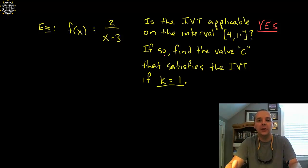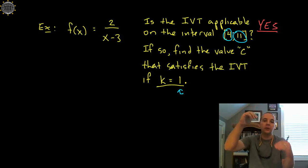And so if so, let's try to find the value of c that satisfies the intermediate value theorem if they provide us a y value of 1. Alright, now the first thing we have to check is to see if 1 is between f(4) and f(11), because we have to see if it is between the first y value and the second y value. 4 and 11 are x values.